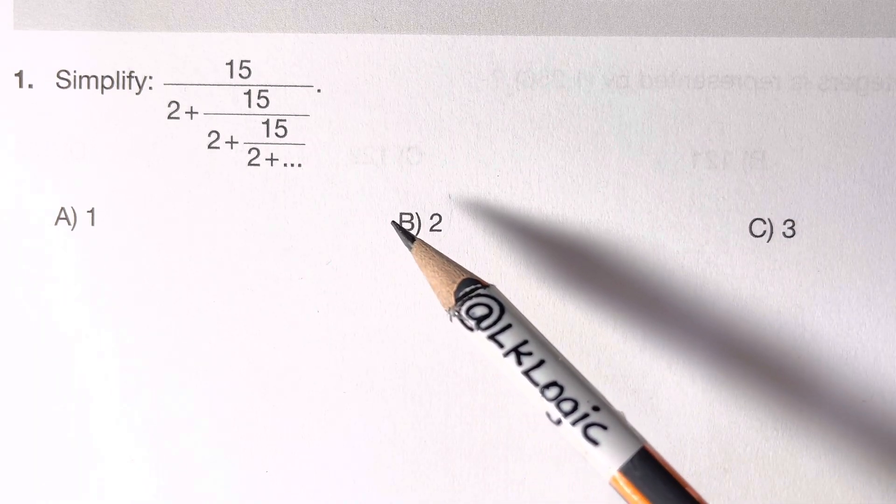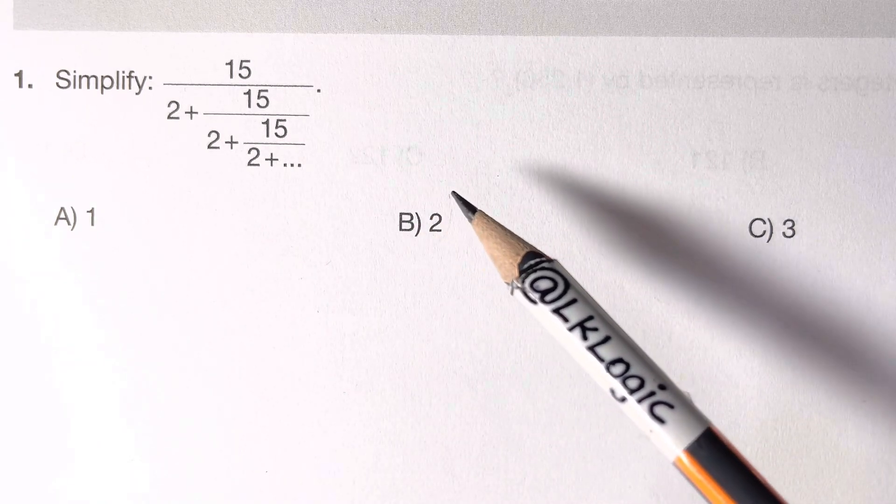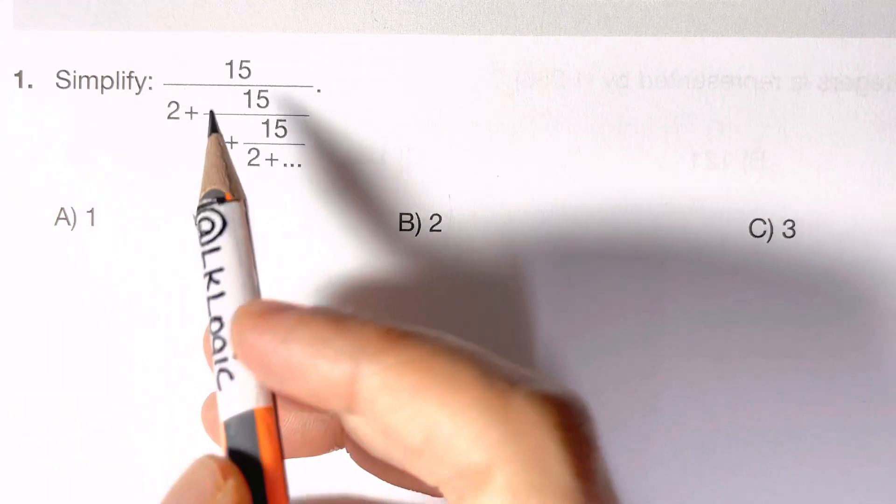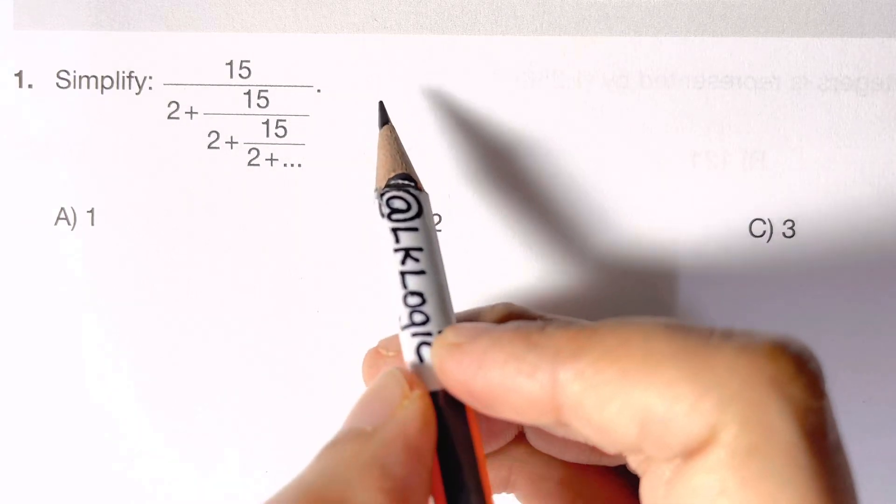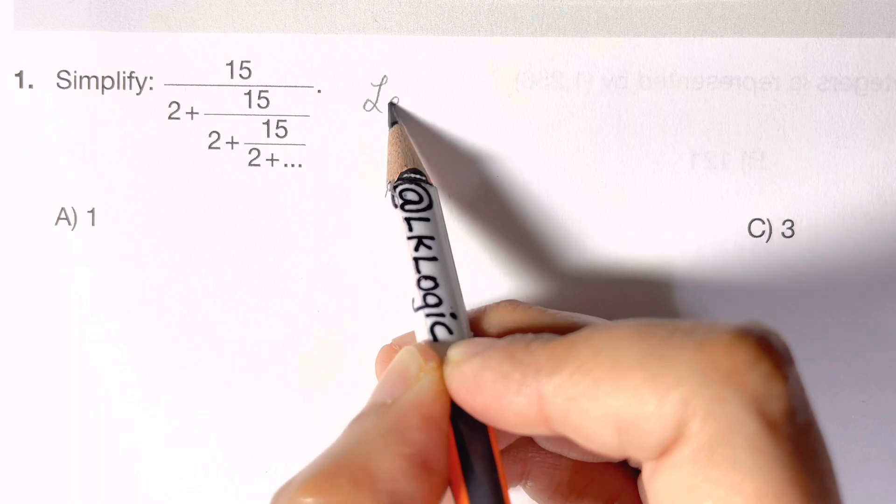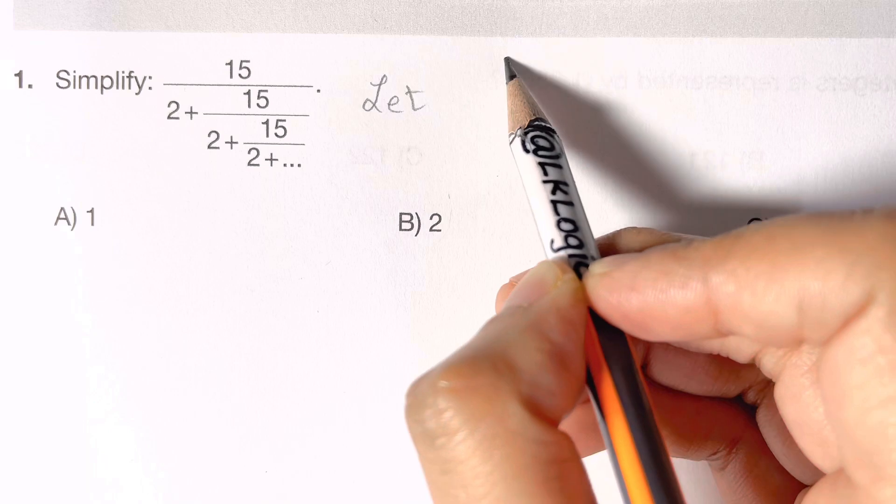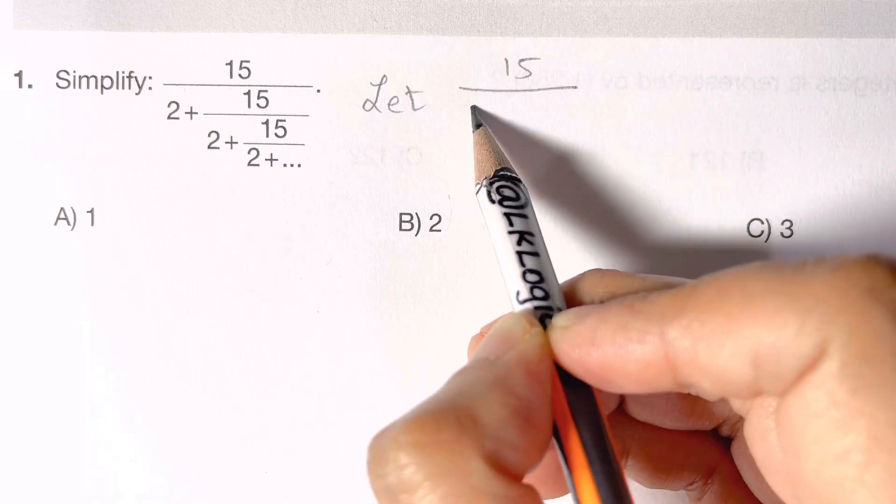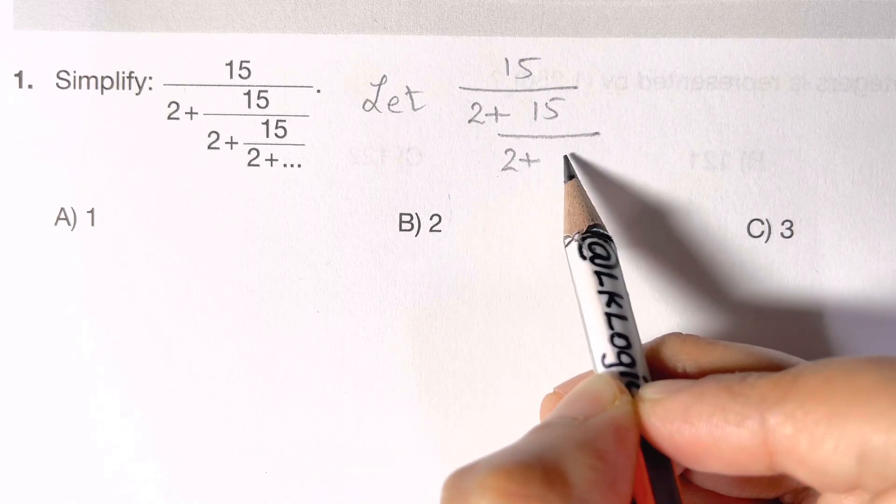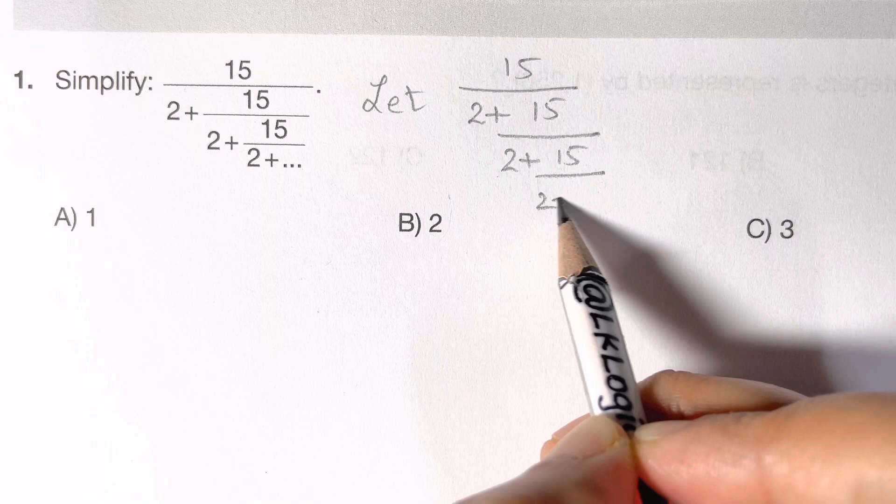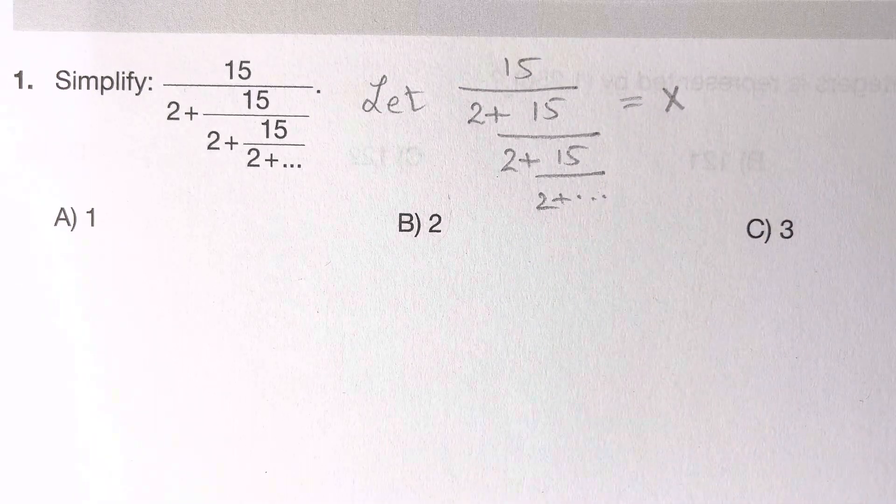One smart way to get around this crazy question is you have to let, you have to assume or suppose that this whole equation is equal to x. So we're going to let this whole equation, that is 15 over 2 plus again the same thing 15 over 2 plus again the same thing 15 over 2 plus and so on, equal to x.